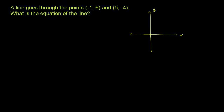The first point is negative 1 comma 6. So negative 1, and counting up to 6 — it's this point right over there. That's negative 1 comma 6.